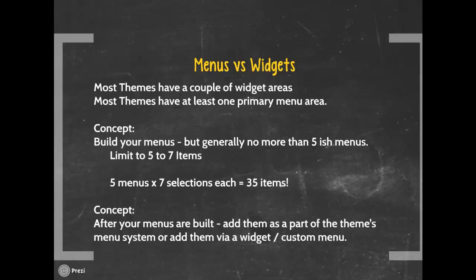You're going to build your menus, but generally no more than five-ish menus per site, and each of those menus is going to be about five to seven items max. If you think about it, five times seven selections — that's at least 35 items that the person can reach from the front page. That's not to say people can't reach other content from other pages. Perhaps you have a page with 15 links on it; those links are reachable by one of your menu items on the front page. The concept is not to overwhelm your user with so many choices at the front end — five menus with seven selections each is 35 items, and that's plenty.